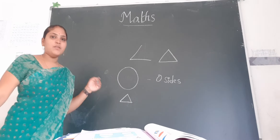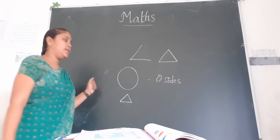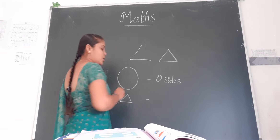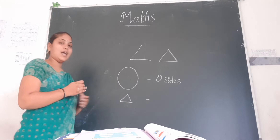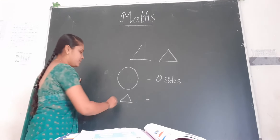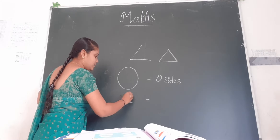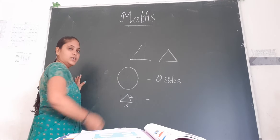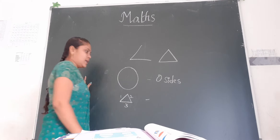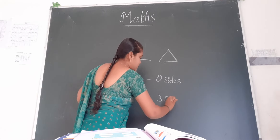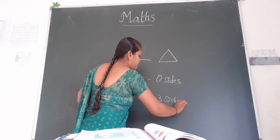Now tell me children, what is the name of this shape? It is a triangle. So how many sides does a triangle have? One, two, three. Triangle has three sides.